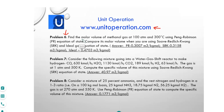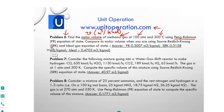The purpose of this problem is to estimate the molar volume V, in units of cubic meters per kilomole, of methanol gas at 100 atmosphere pressure and 300 degrees Celsius, using three different equations of state: first, the Peng-Robinson equation of state; second, the SRK (Soave-Redlich-Kwong) equation of state; and third, the ideal gas equation of state.